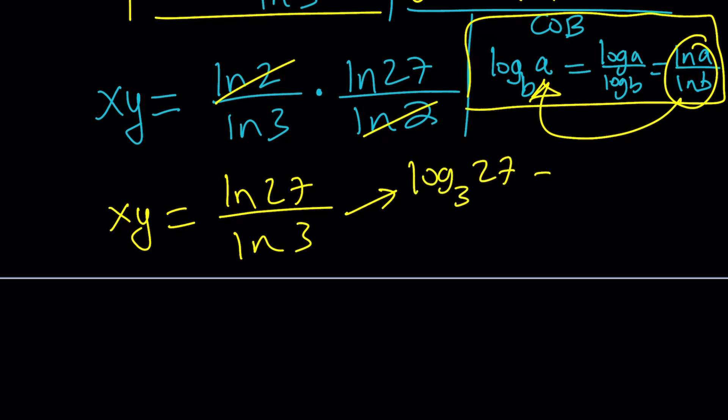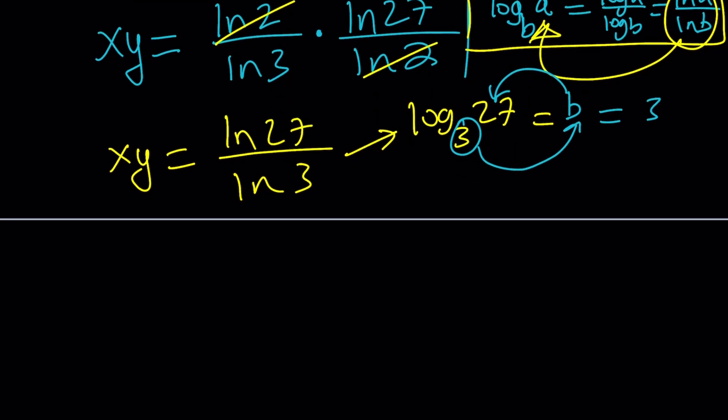And then this is equal to 3 because the question you need to ask whenever you see a log equation, and this is basically the definition of logs, and you can call this kind of B if you want. Let's call this B. And that just means 3 to the power what number equals 27. And the answer in this case would be a 3 because 3 to the third is 27.